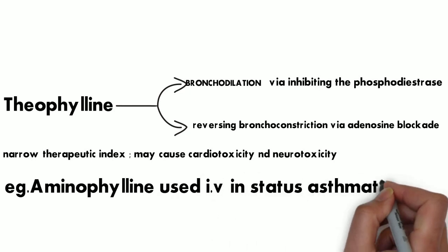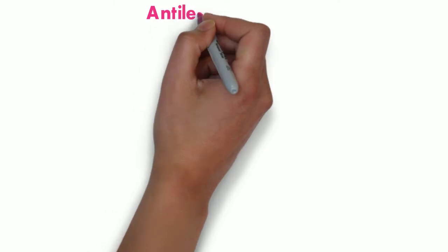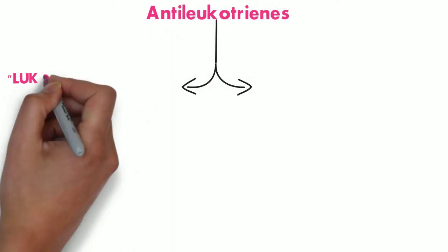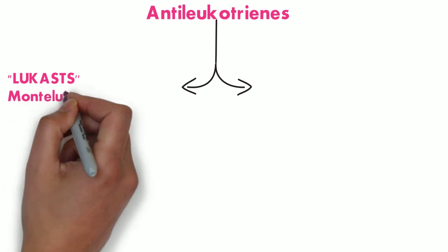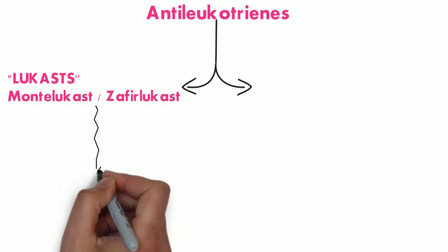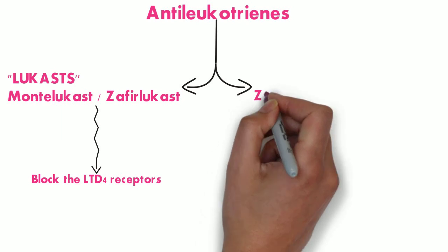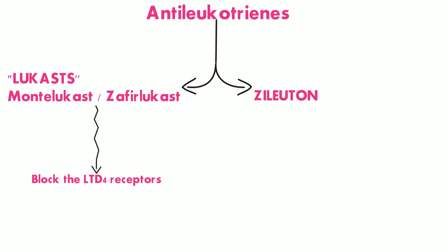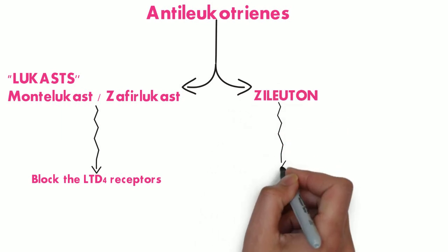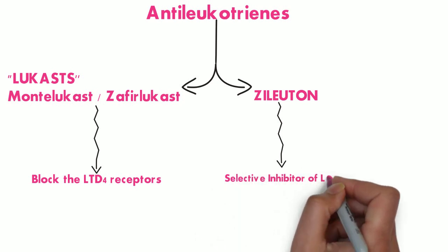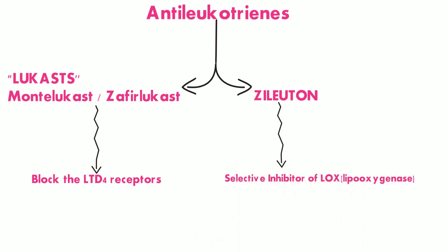An example is aminophylline, which is used IV in the management of status asthmaticus. Now let's cover the antileukotrienes. This consists of two classes of drugs: one is the leukotriene receptor blockers which include montelukast and zafirlukast, which block the leukotriene receptors. The other class consists of a single drug called zileuton, which is an inhibitor of the lipoxygenase enzyme involved in the synthesis of leukotrienes.